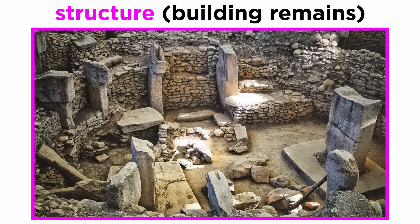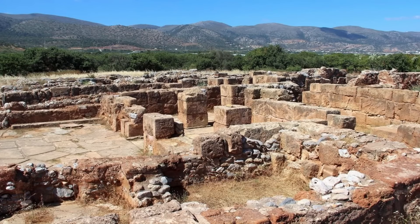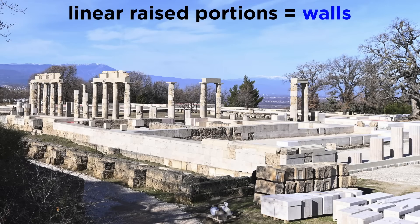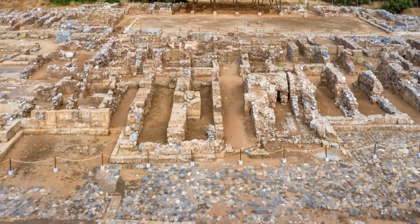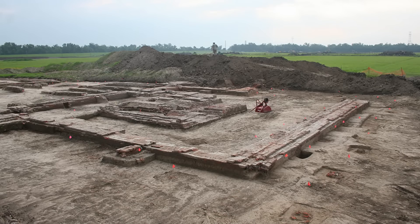The first feature type we will look at is a structure. A structure is simply the remains of a building. This ranges from sheds with four stakes in the ground to entire palaces. Many structures have stone foundations, which help preserve their footprint. Linear raised portions on foundations would usually be identified as walls. Mapping these walls lets archaeologists create maps of large structures and entire towns. Structures with stone foundations but wooden or organic walls are also common. The walls can usually still be identified and mapped from linear stains on the stone foundation.